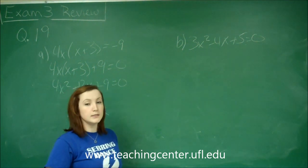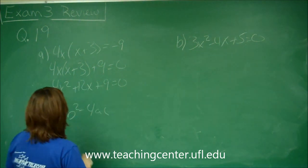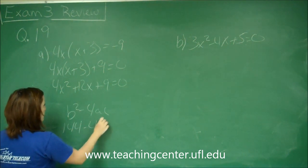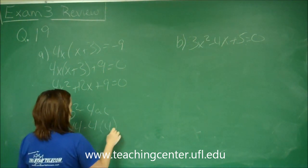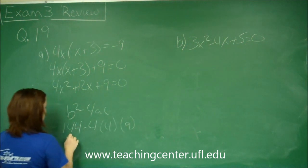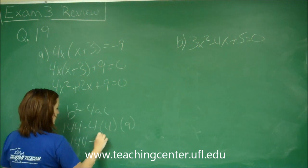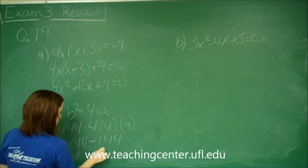And if it's negative we have two distinct complex solutions. So here we get b squared which is 144 minus 4 times 4 times 9. So 144 and then we've got 36 times 4 which is actually 144. So we get 0 here.